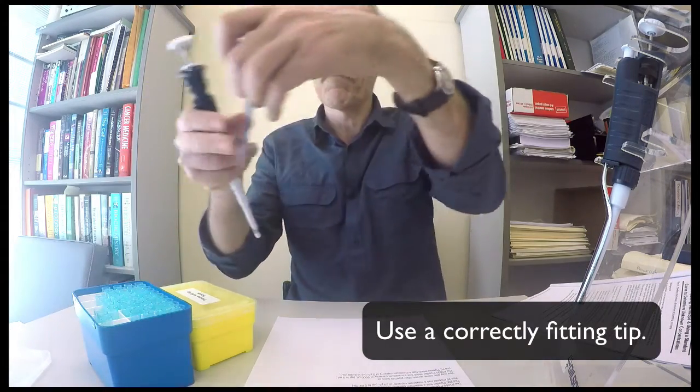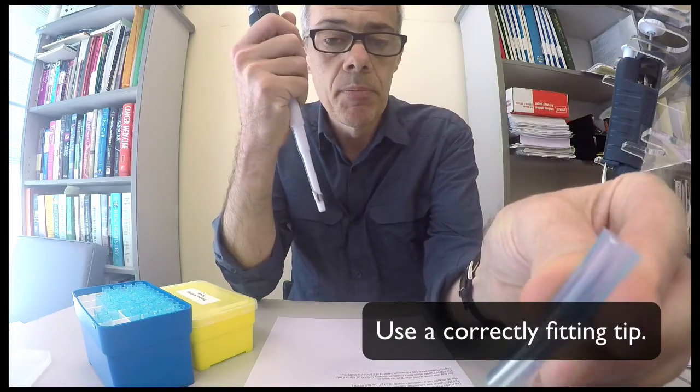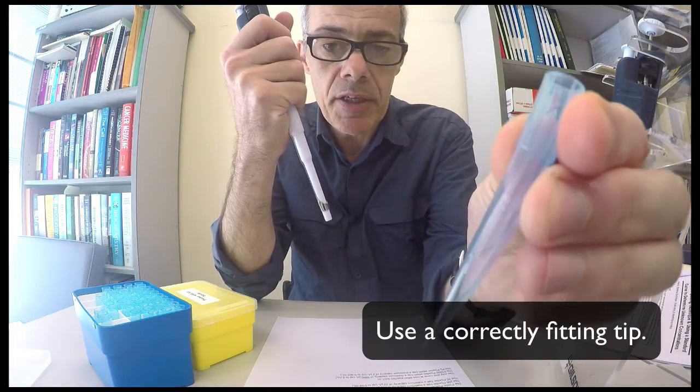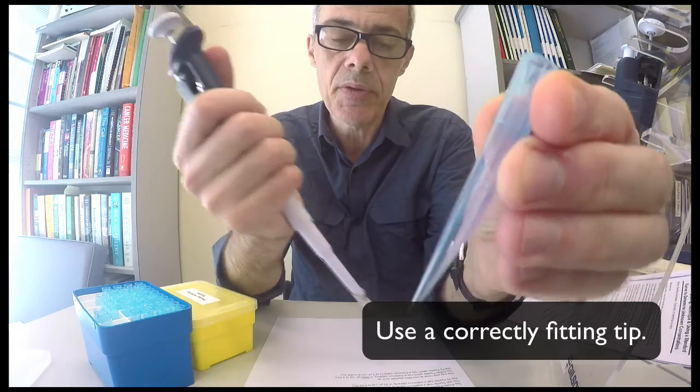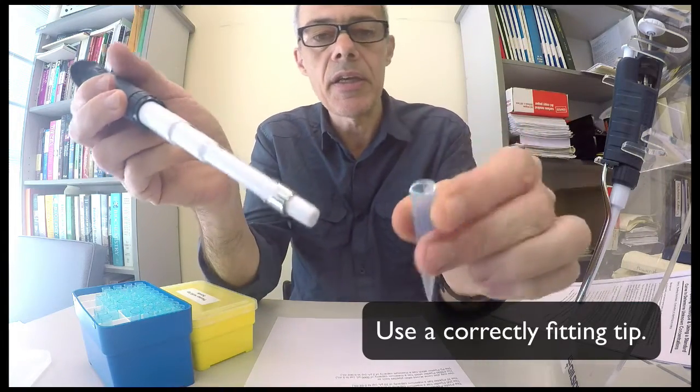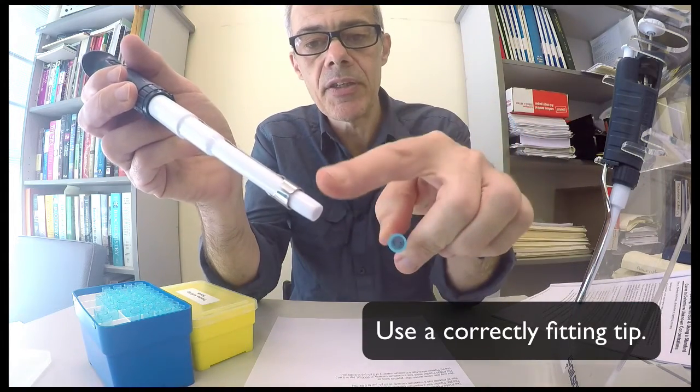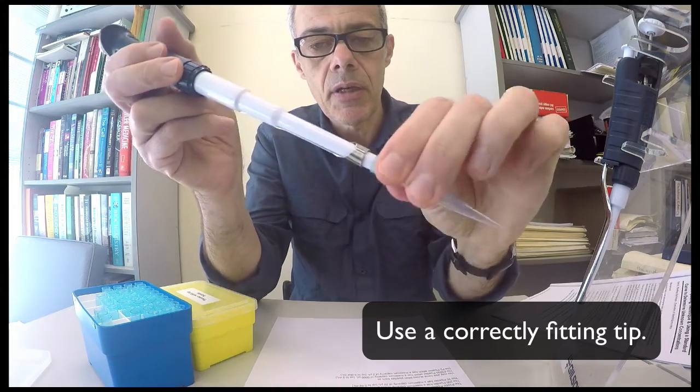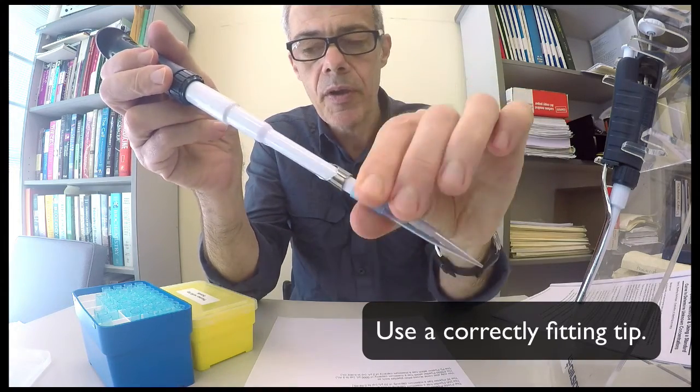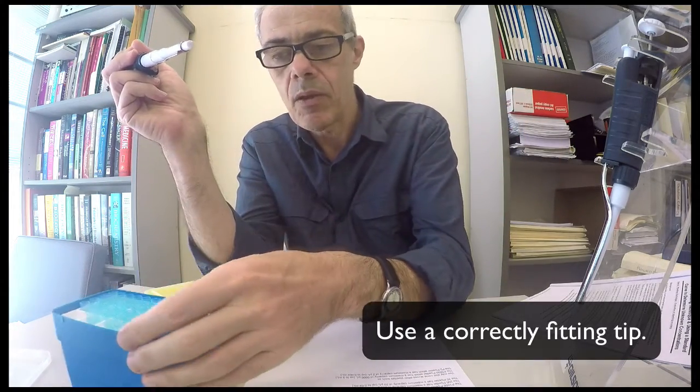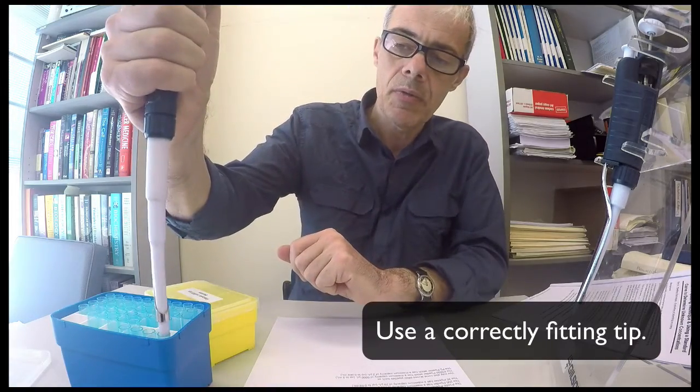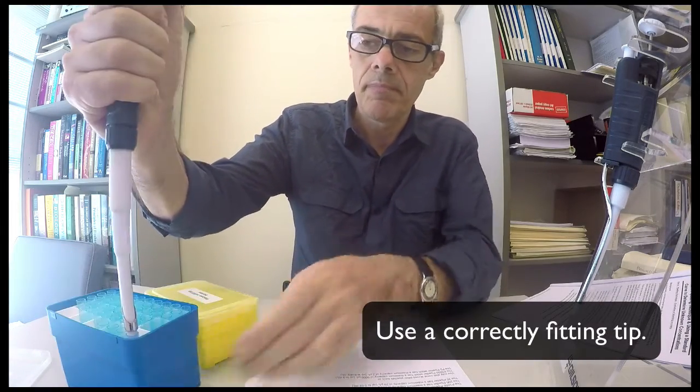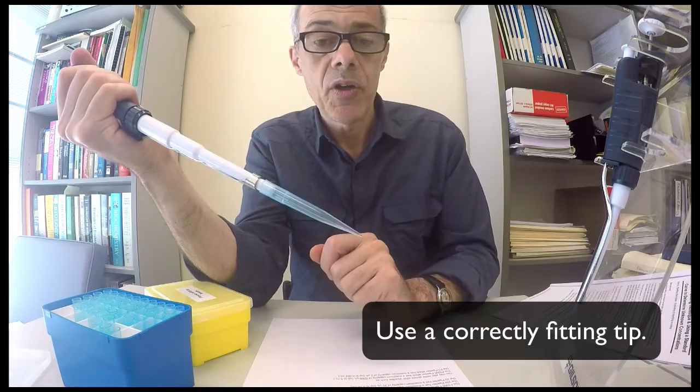This is what a blue tip looks like. These tips fit the P1000 and you'll notice that the diameter here matches the diameter here, so it just clips on. So effectively what you do is just lightly put it on.